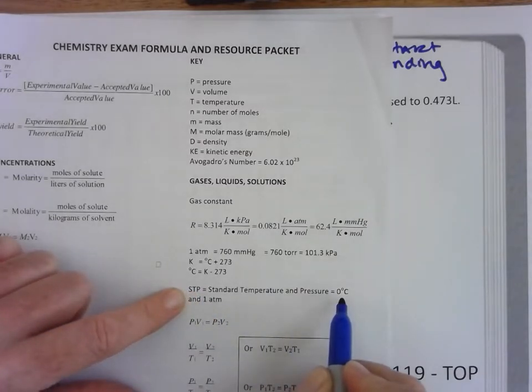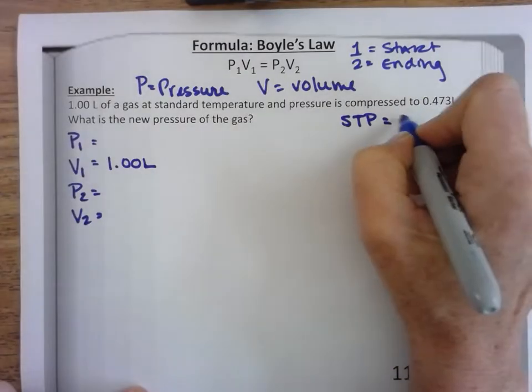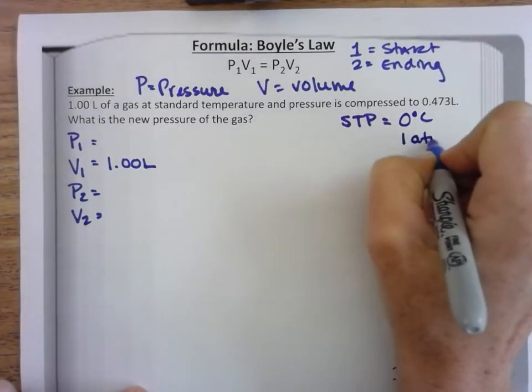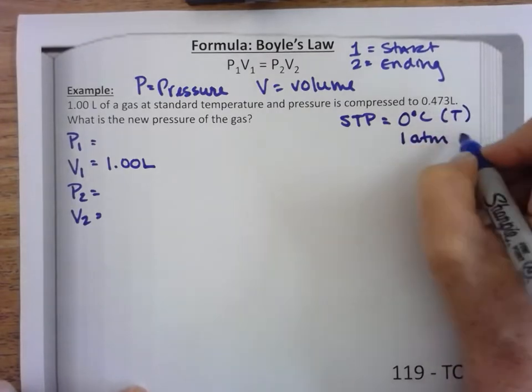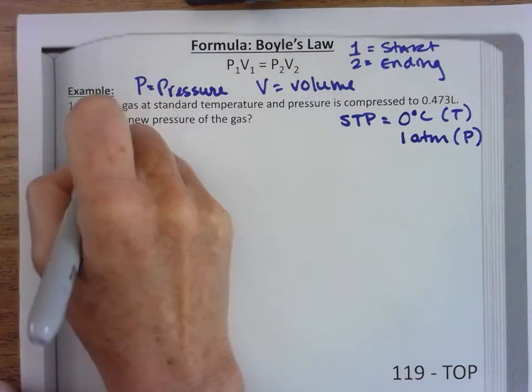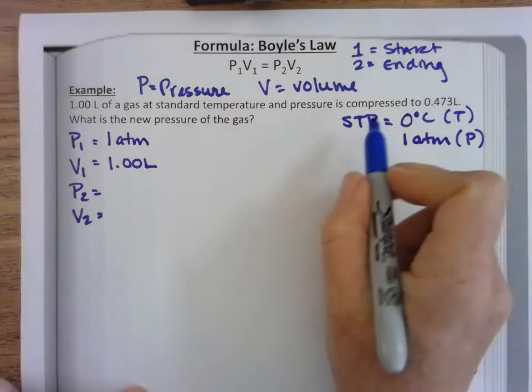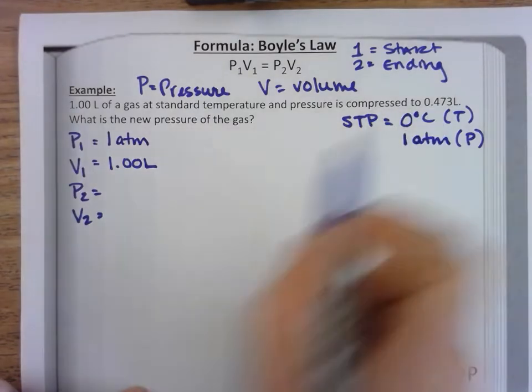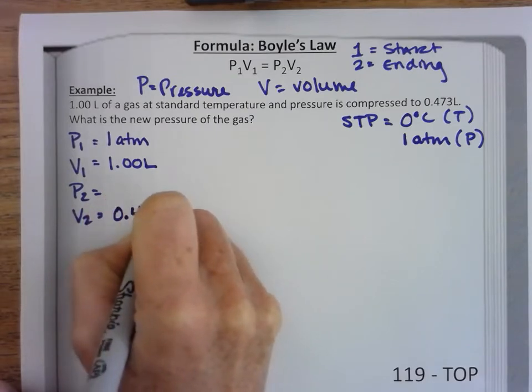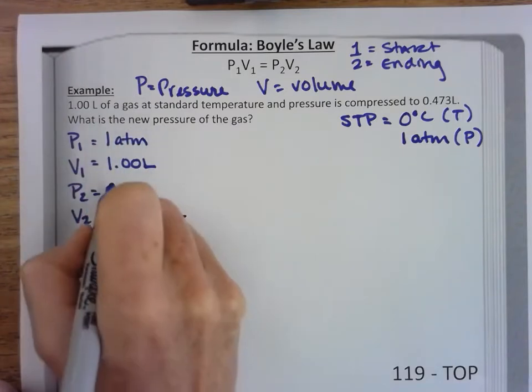So STP is zero Celsius which is temperature and one ATM which is pressure. This is for Boyle's law so I want the pressure, so one ATM. It tells me that I'm compressing this to 0.473 liters. And it asks me what the new pressure is, so that becomes a question mark.